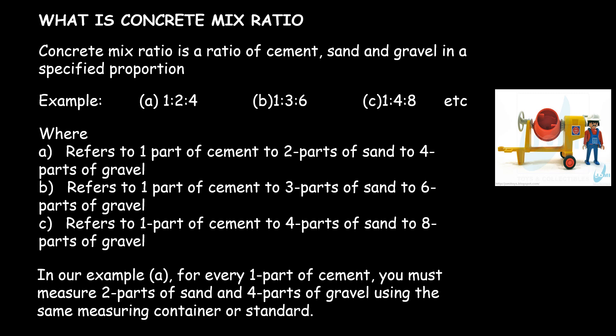In our examples above, for every one part of cement you must measure two parts of sand and four parts of gravel using the same measuring container. Having understood the mix ratio, let us now dive into what is batching by volume.